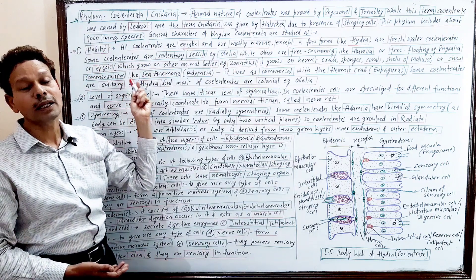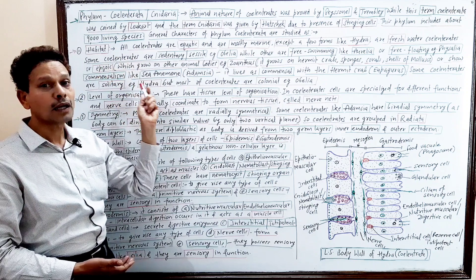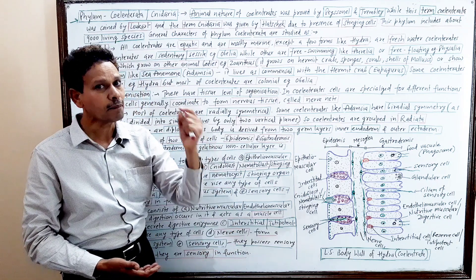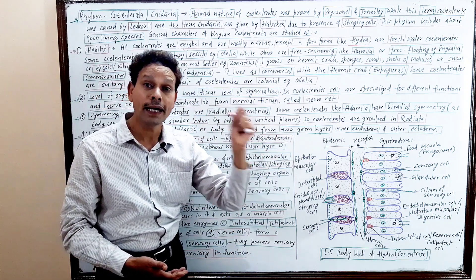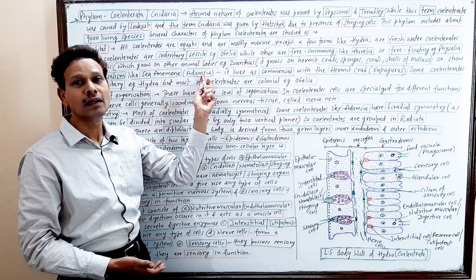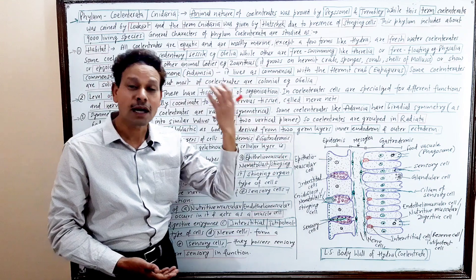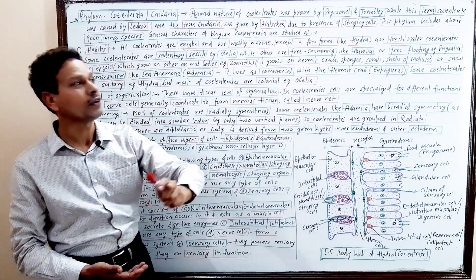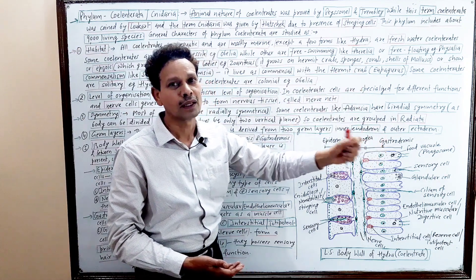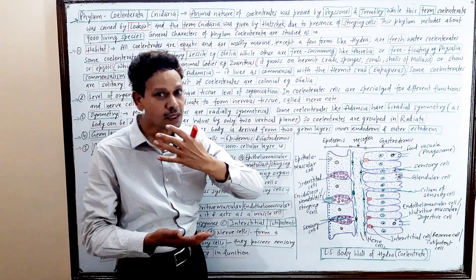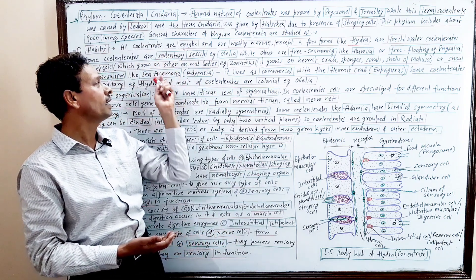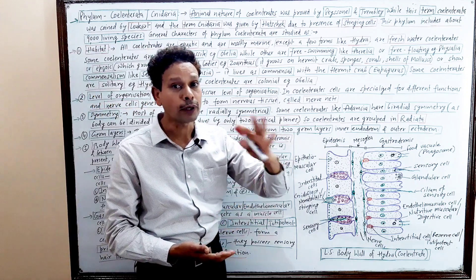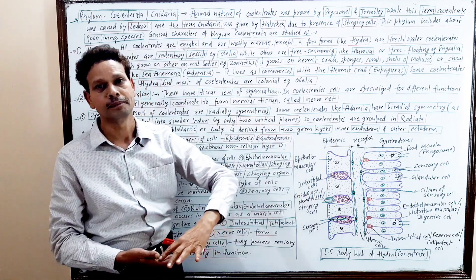Another important point: some coelenterates show commensalism — they live as commensals. A very important example is Adamsia, a sea anemone. Adamsia lives as a commensal in association with the hermit crab Eupagurus. The hermit crab provides transportation for this sedentary animal, while Adamsia provides protection like an umbrella.